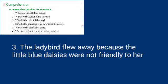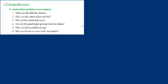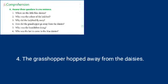The ladybird flew away because the little blue daisies were not friendly to her. Fourth question: how did the grasshopper go away from the daisies? The grasshopper hopped away from the daisies. The movement of a grasshopper is called hopping.